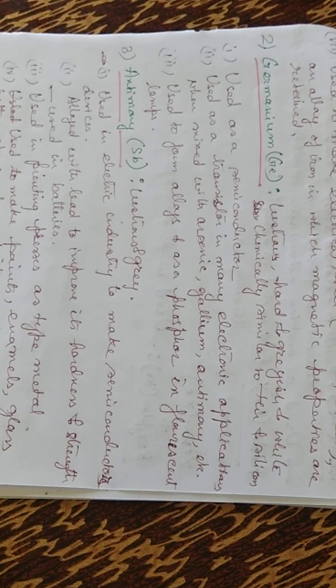When mixed with arsenic, gallium and antimony, etc., they are used to form alloys and as a phosphor in fluorescent lamps.